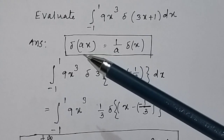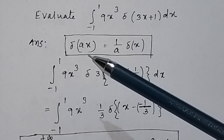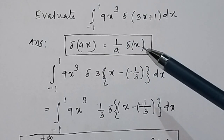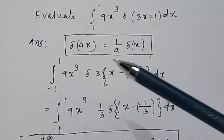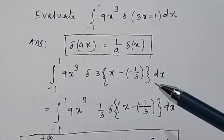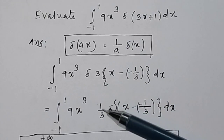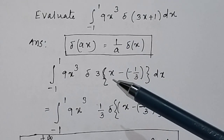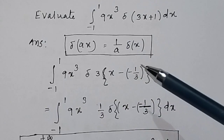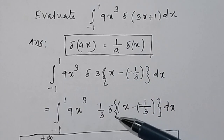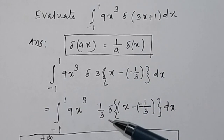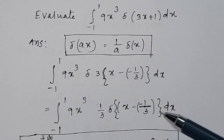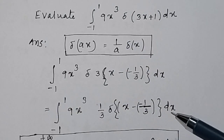We know delta(ax) is equal to 1 over a times delta(x), so this value we can replace by 1 over a times delta, and this is the x. So we get 1 over 3 times delta(x minus minus 1 over 3), then dx.